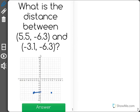Now, as you can see, we have a straight line between the two, because our y values are the same. So really, all that we're looking for here is the difference between 5.5 and negative 3.1.